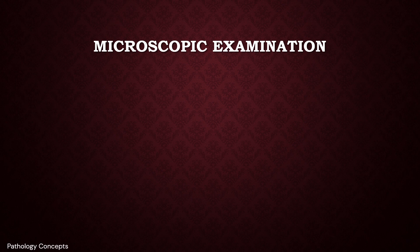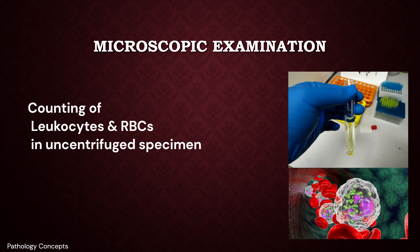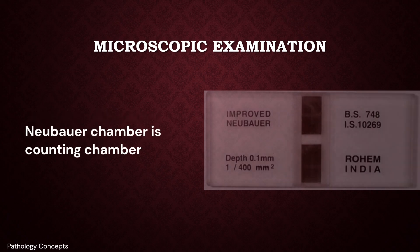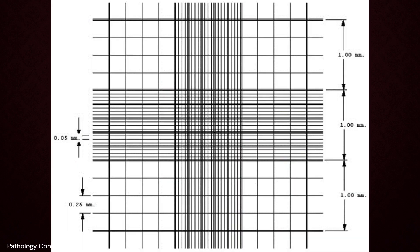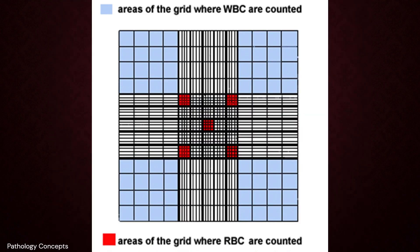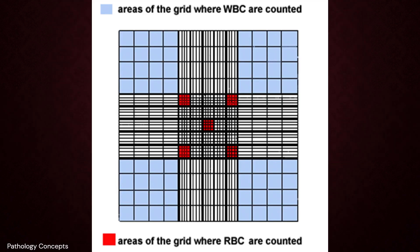Microscopic examination of CSF involves counting leukocytes and RBCs in an uncentrifuged specimen, performed with a Neubauer chamber or automatically in a hematology analyzer. The central region of the counting grid is important for cell count. There are four corner squares, each containing 16 small squares, used for WBC counting. The central square containing 25 small squares is used for RBC count. Each square measures 1 mm and the depth is 0.1 mm, used for calculating cells per microliter.